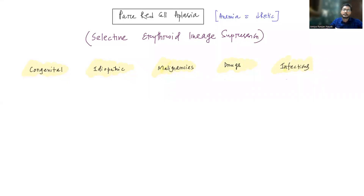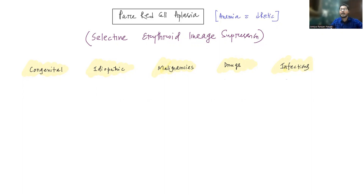Hello everyone. In this lecture, we are going to study about a condition known as pure red cell aplasia. The basic difference between aplastic anemia and pure red cell aplasia is that in aplastic anemia, all the lineages are affected, but in pure red cell aplasia, only the erythroid lineage is affected. There will be halting in erythropoiesis. These patients will have anemia while other cell lines remain normal, and they will have a lower reticulocyte count because erythropoiesis itself is defective.